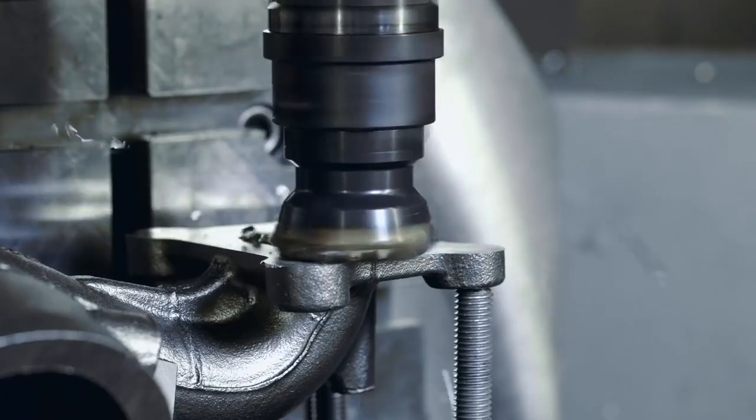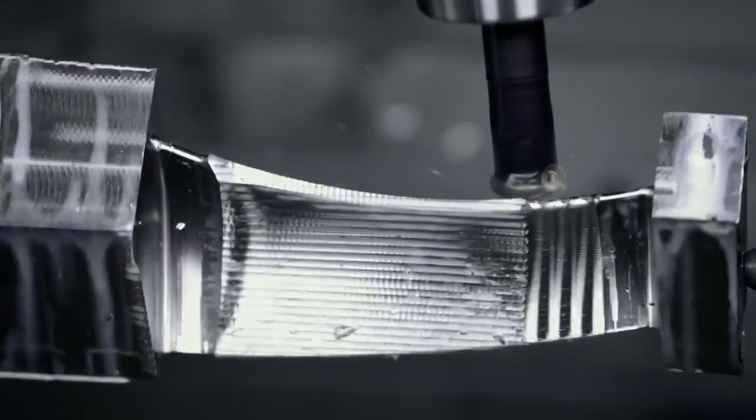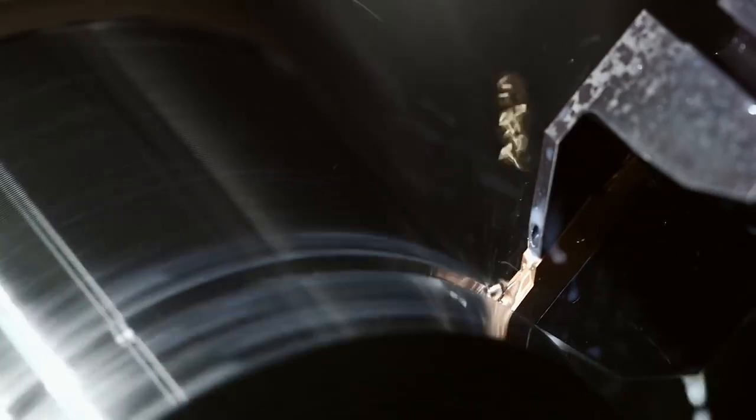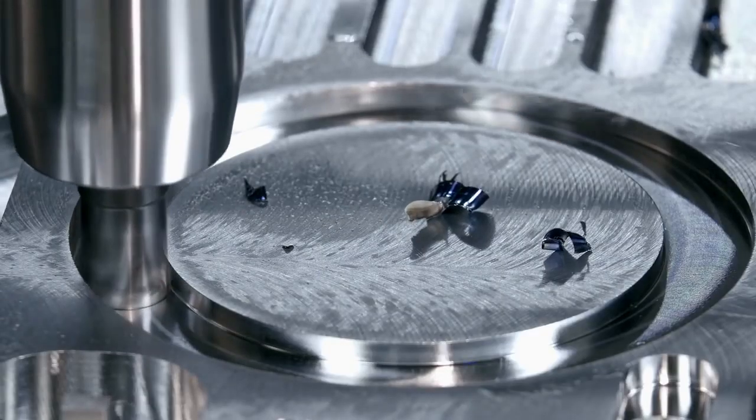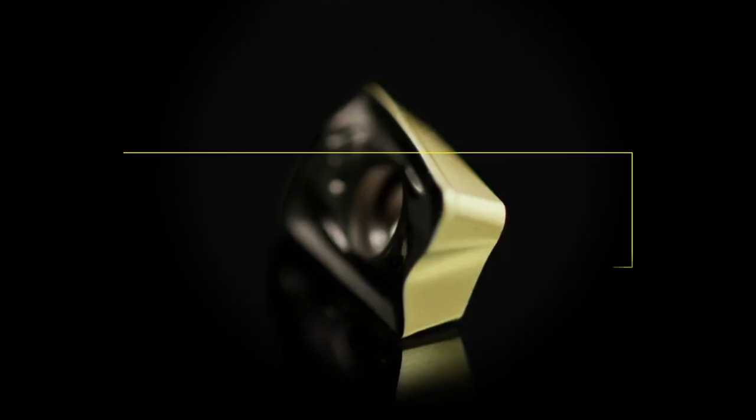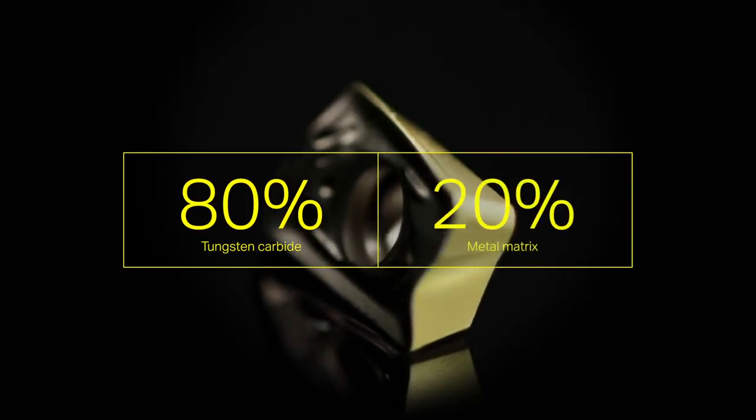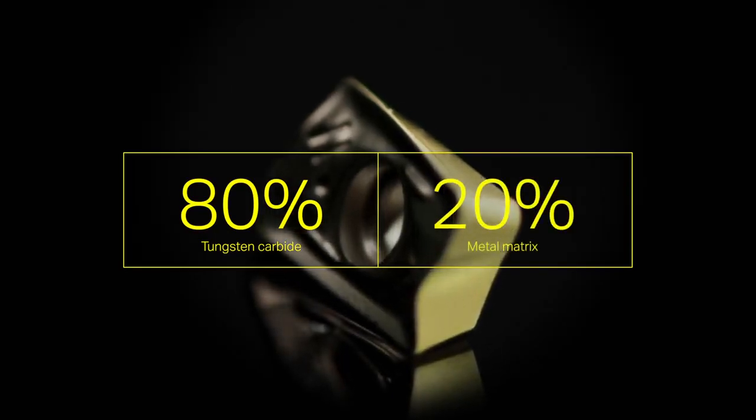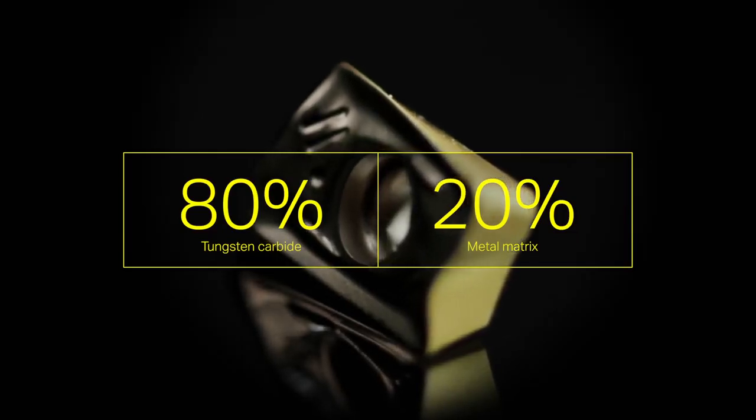Almost everything made of metal is machined with an insert. The insert has to withstand extreme heat and force, so it's made of some of the hardest material in the world. A typical insert is made of 80% tungsten carbide and a metal matrix that binds the hard carbide grains together, where cobalt is the most common.